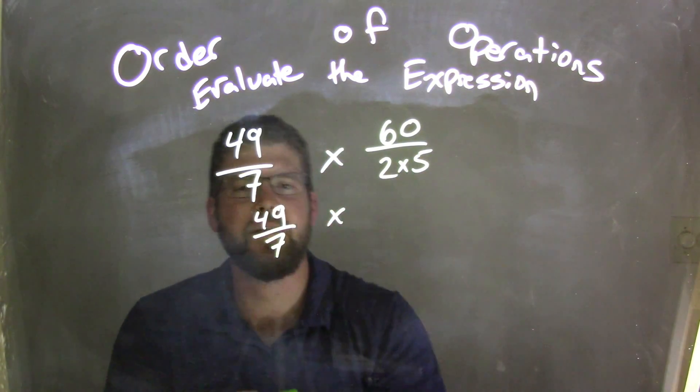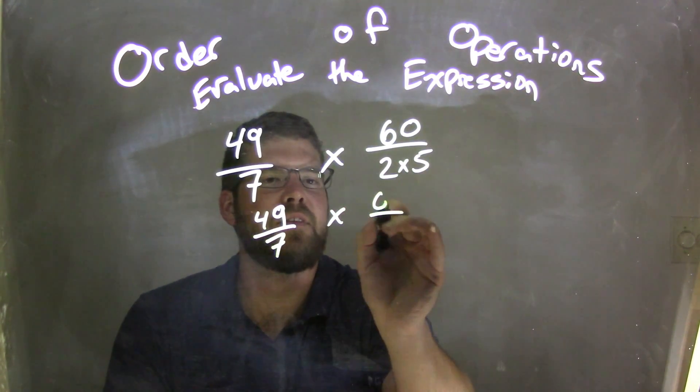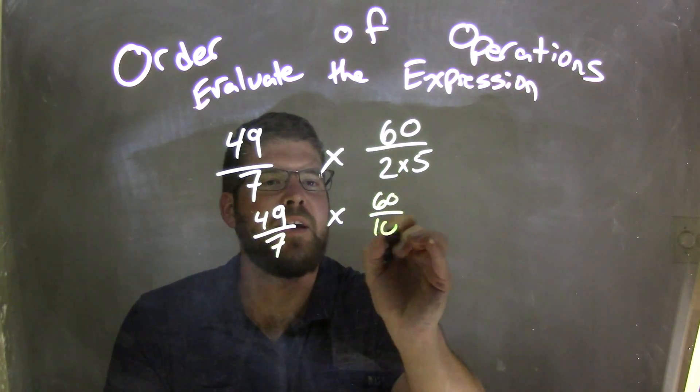60 over 2 times 5. Well, 2 times 5, the denominator, let's simplify that. I have 60 on top, 2 times 5 is 10.